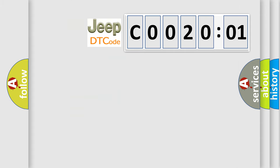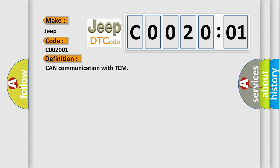So, what does the diagnostic trouble code C0020:01 interpret specifically for Jeep car manufacturers? The basic definition is: CAN communication with TCM. And now this is a short description of this DTC code.